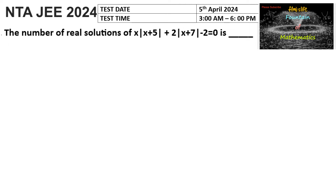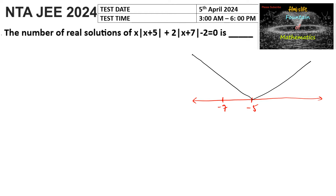Find the number of real solutions of x times mod of x plus 5, plus 2 times mod of x plus 7, minus 2 equals 0. Here, mod of x plus 5 becomes 0 when x equals negative 5, and x plus 7 becomes 0 when x equals negative 7. We can see the graph of mod of x plus 5 and mod of x plus 7.